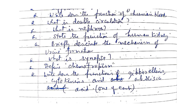Differentiate between artery and vein. Write down the function of human blood. What is double circulation? What is a nephron? State the function of the human kidney. Briefly describe the mechanism of urine formation. What is a synapse? Define chemotropism. Write down the function of gibberellin.